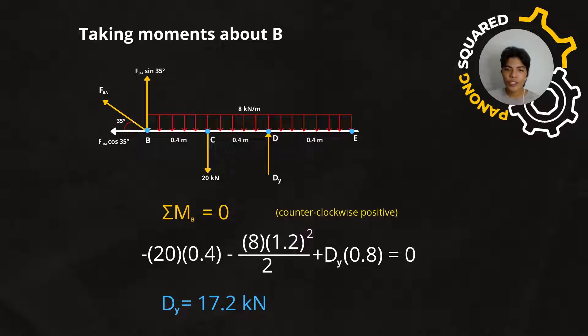Notice that the first two terms are negative, and the last term is positive. It is because we set that the rotation is counterclockwise positive with respect to point B.